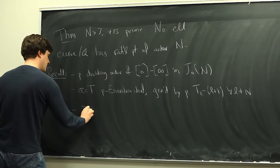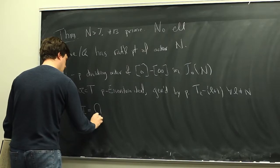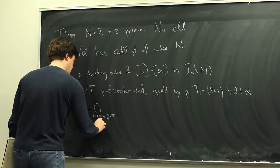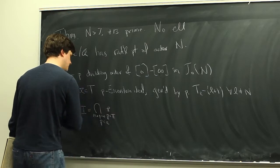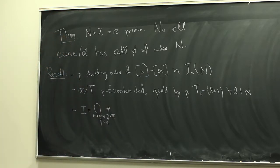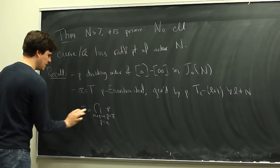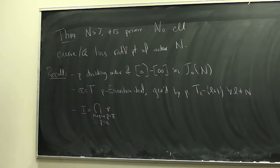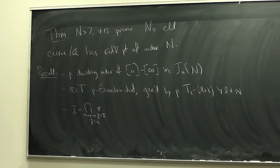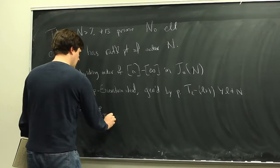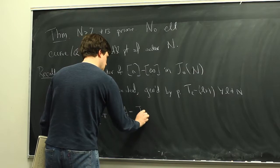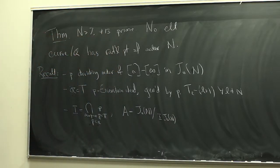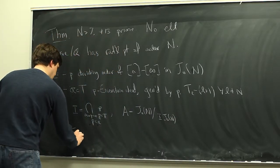We let I be the intersection over the minimal primes p, which are contained in this maximal ideal a. We showed a was a non-trivial maximal ideal. These primes cut out the irreducible components of Spec T, and we're just taking the union of those components that contain the point corresponding to a. And we define the Abelian variety A to be the quotient of J_0(n) by I. To prove the theorem, it's enough to show that this A has rank zero.